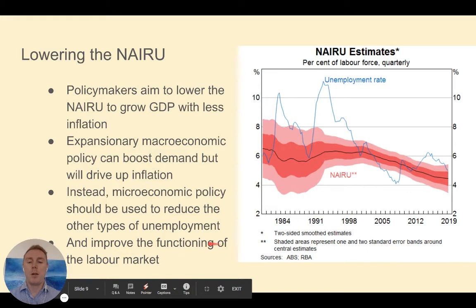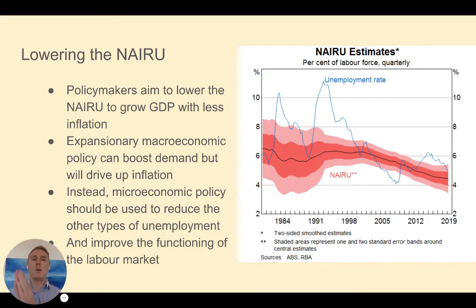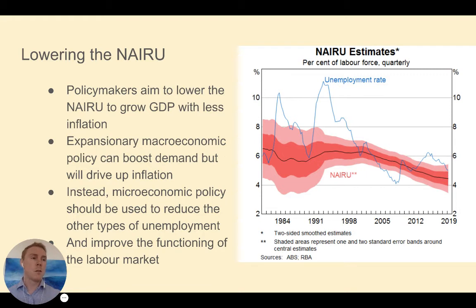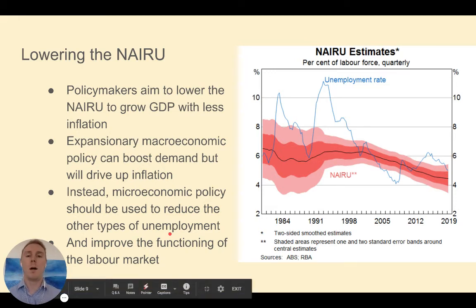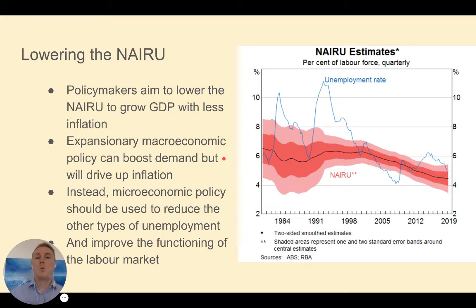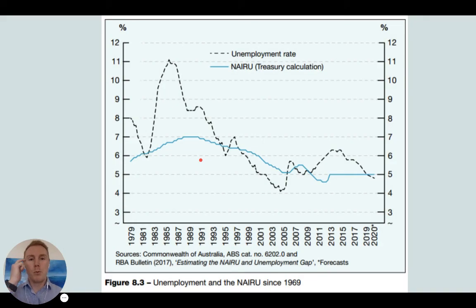To do this, they want to improve the functioning of the labour market. Some suggestions include improving policies to retrain and reskill workers — workers who have become structurally unemployed need their skills matched to jobs that are now needed. It could also mean encouraging the participation of workers who have left the workforce and become discouraged, or reducing the hurdles for people with disabilities to remain in work. That would lower the NIRU and improve workforce participation.